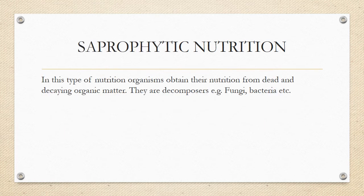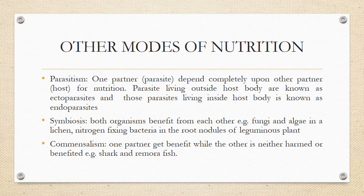In saprophytic nutrition, organisms obtain their nutrients from dead, decaying organic matter. Because the matter is dead and decaying, these organisms are excellent decomposers. Examples of saprophytic organisms are fungi and bacteria.